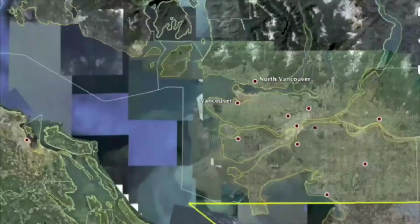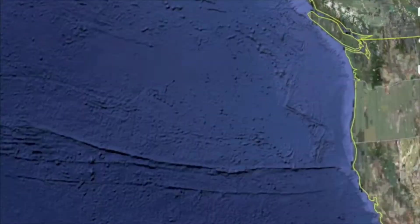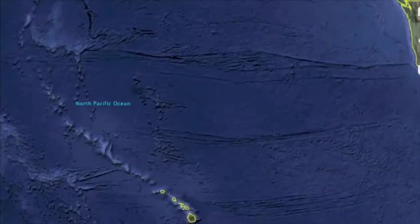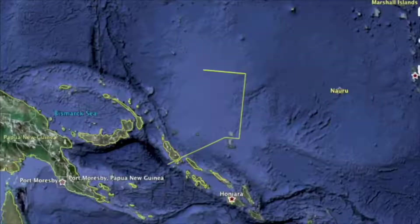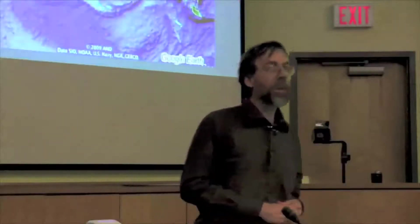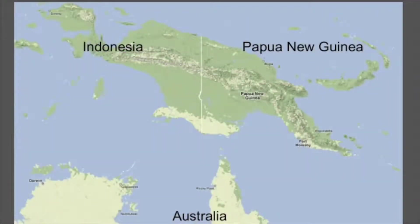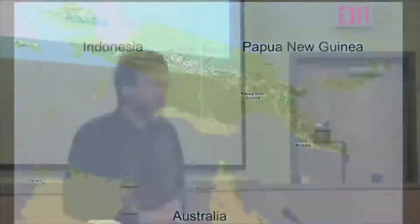So where is Papua New Guinea? Here we are in Vancouver. We can fly over with Google Earth, across the Pacific, past Hawaii, down towards Australia, and we'll find Papua New Guinea north of Australia, one of the world's larger islands. The eastern half is the country of Papua New Guinea. The western half belongs to Indonesia.